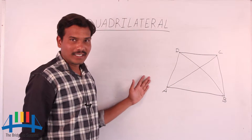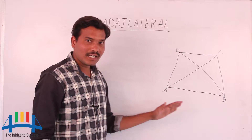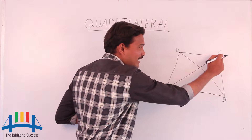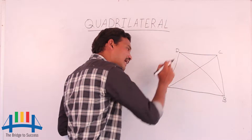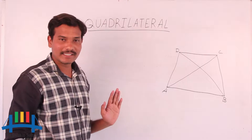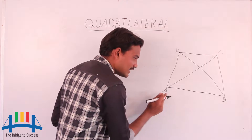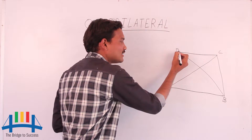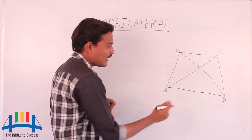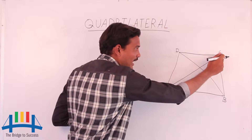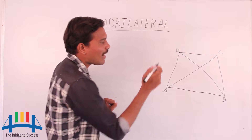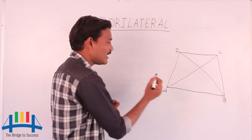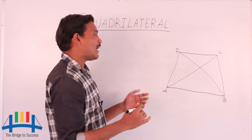In a quadrilateral, it is a simple closed figure formed by four line segments: AB, BC, CD, and DA. It has four vertices: A, B, C, D. It has four angles, one at each vertex — A, B, C, and D. And we have two diagonals: BD is one diagonal and AC is the other.